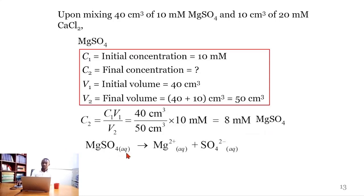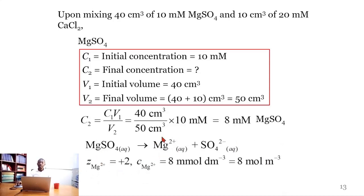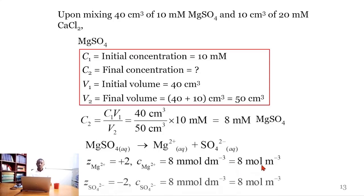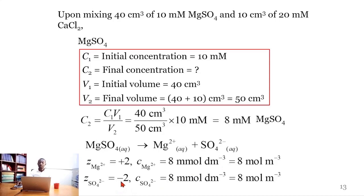Magnesium sulfate dissociates completely in solution into magnesium ions and sulfate ions, and one mole of magnesium sulfate gives one mole of magnesium ion and one mole of sulfate ion. So the concentration of magnesium sulfate equals the concentration of both ions. The charge of magnesium ion is +2 with concentration 8 mM per dm³, equivalent to 8 mole per m³. For sulfate ion, the charge is −2 with the same concentration of 8 mole per m³.